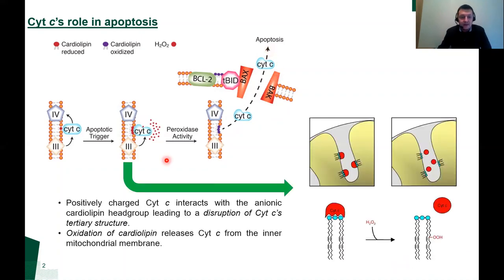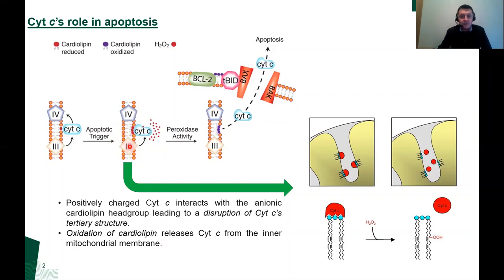What I'm particularly interested in is the interaction of positively charged cytochrome C with the anionic cardiolipin head group, leading to the disruption of cytochrome C's tertiary structure. Also, the fact that cardiolipin is oxidized and releases cytochrome C from the inner mitochondrial membrane — this is the step we're going to mimic in our electrochemical cell.